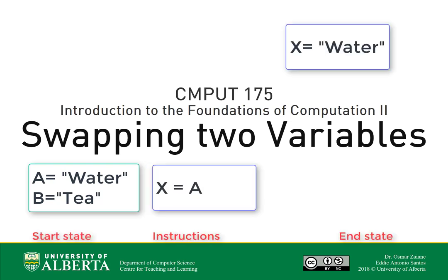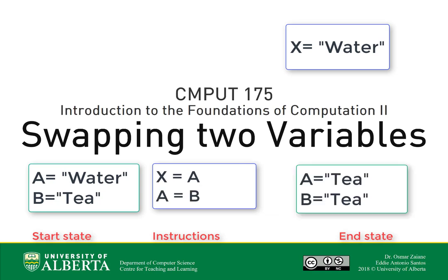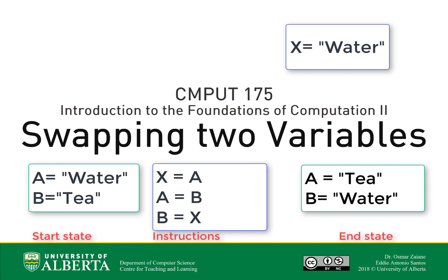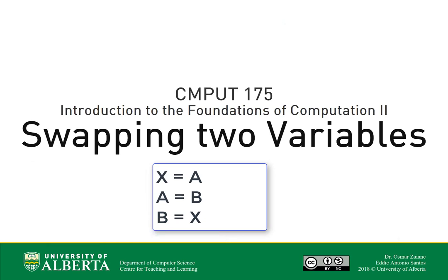And A I will reassign with what's in B. And then B finally will be assigned with what was temporarily stored in X. Et voilà! A and B are swapped using three instructions.